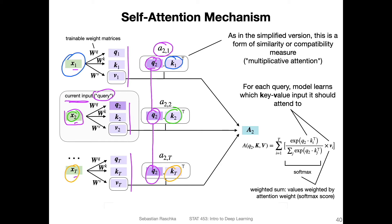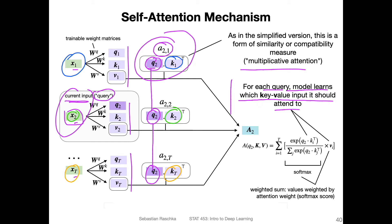The terms query, key, and value come from the field of databases, though here they are just names for different parts of this computation. This is also known as scaled dot product attention — or more generally multiplicative attention, as opposed to additive attention. For each query, the model learns which key-value input it should attend to. After computing these dot products, there is also a normalization via the softmax, and then the results are summed up to form the context-aware embedding of the input.